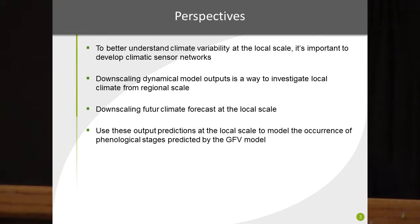Downscaling future climate forecasts at local scale is important. Using these output prediction models at local scale, we will model the occurrence of phenological stages predicted by, for example, the GFV model. This will be a very interesting tool for wine growers to better anticipate climate change and to better adapt plant material and viticulture practices to the local specificity of climate.